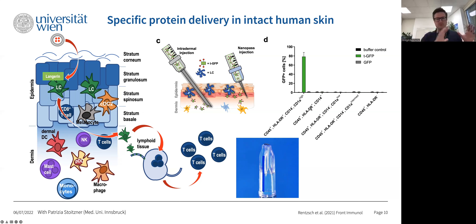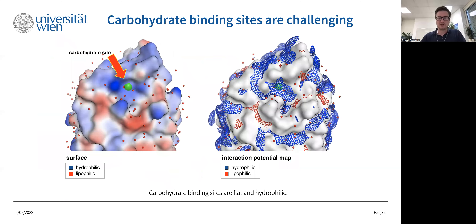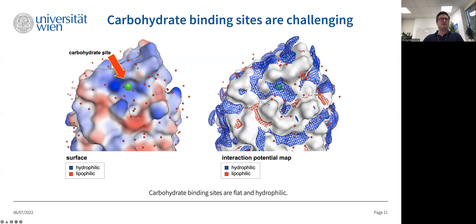To showcase this in intact human skin, we used either intradermal injection with conventional needles or microneedle injectors from the company Nanopass, injecting directly labeled GFP that we can easily track. In the complex environment of human skin, the targeted GFP is taken up exactly by Langerhans cells, which are CD45, HLA-DR, and CD1a high-positive and CD14-negative. All other cell types found in the skin do not take up the particles or targeted protein in significant amounts.